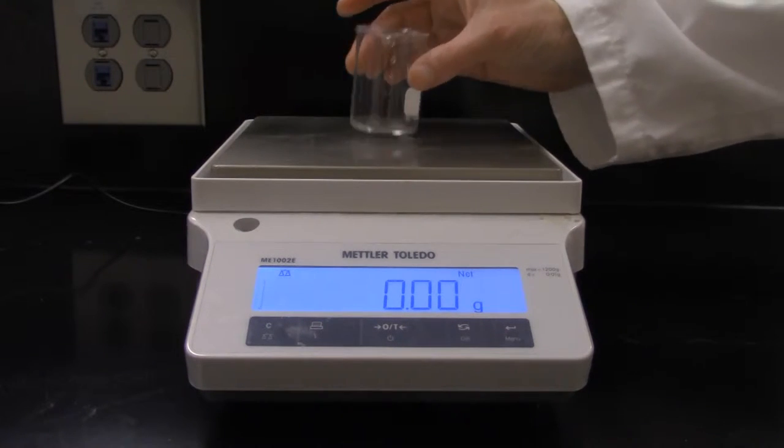If you want to measure the mass of a liquid, then what you can do is push the zero button again with the beaker in place, remove the beaker, pour the water into the beaker, and place it back on the balance. Now you have the mass of the water in the beaker. You should never pour liquids into a beaker while it's on a balance.